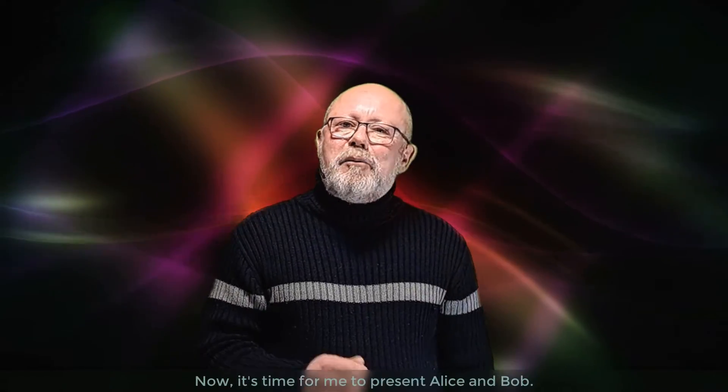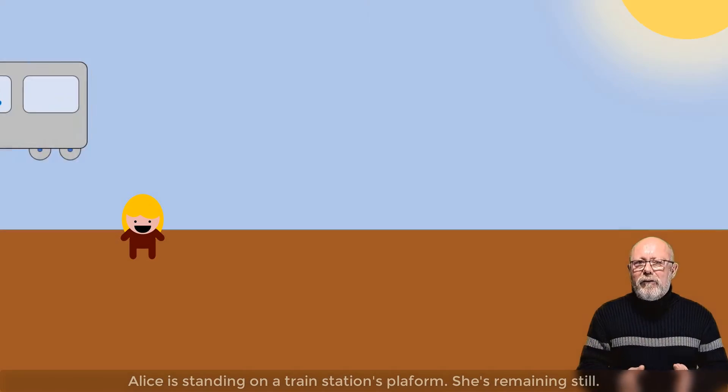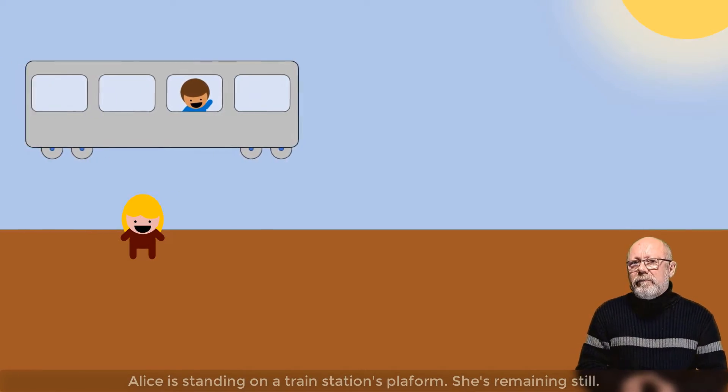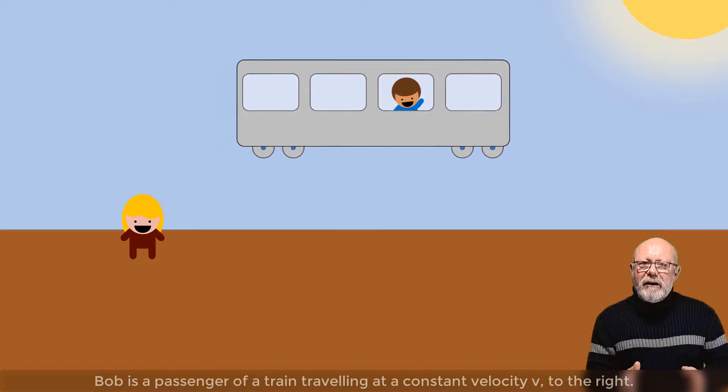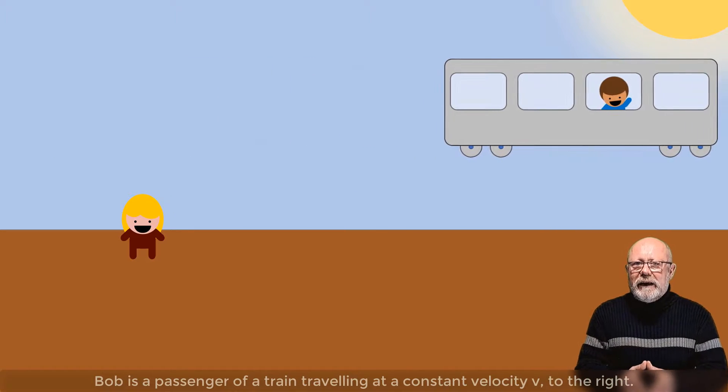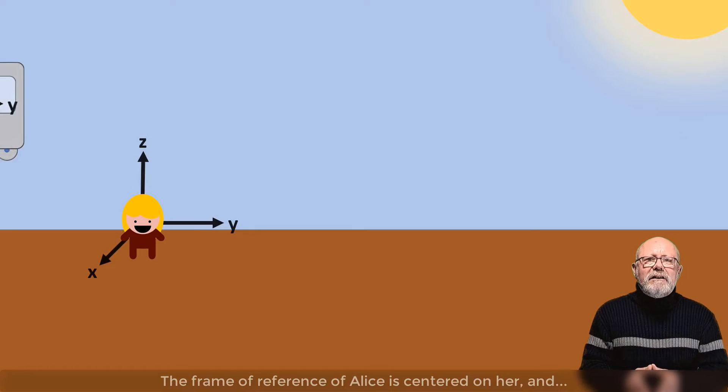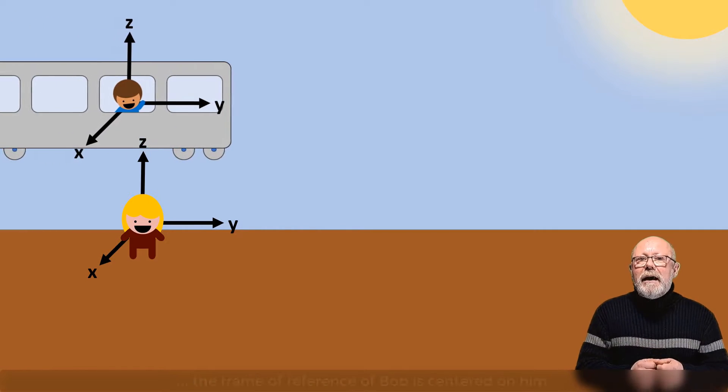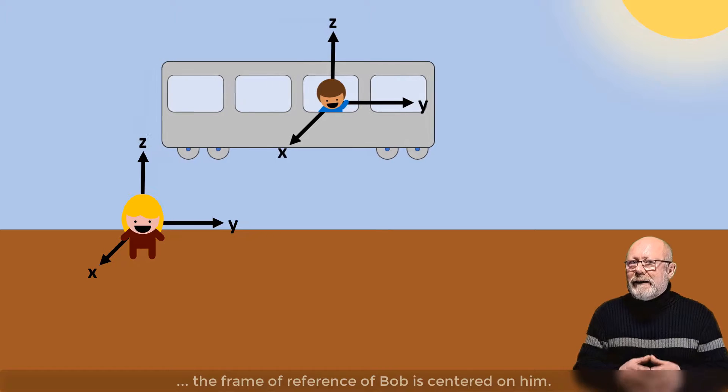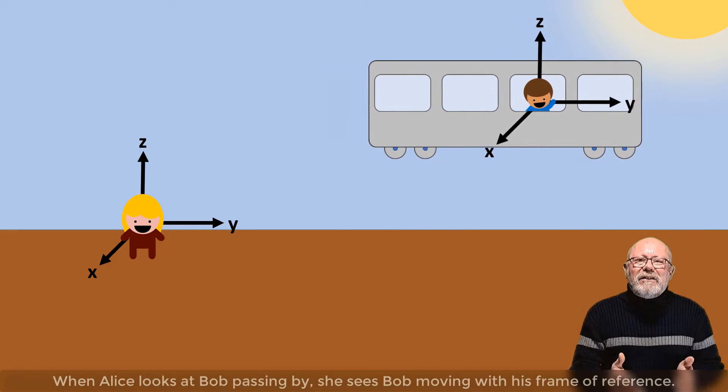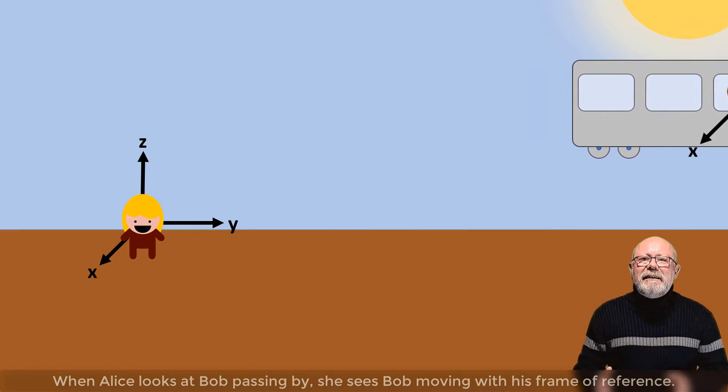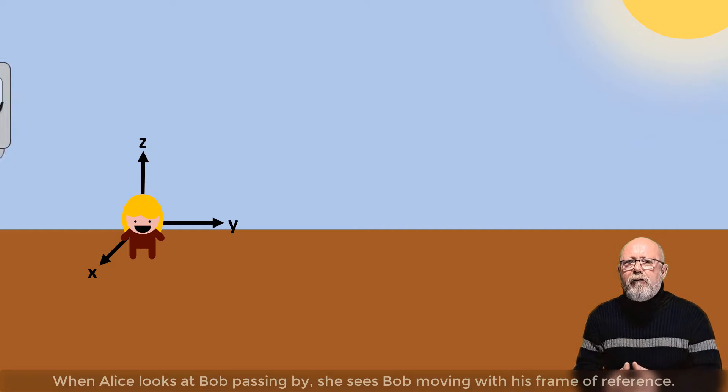Now it's time for me to present Alice and Bob. Alice is standing on a train platform. She is remaining still. Bob is the passenger of a train travelling at a constant velocity v to the right. The frame of reference of Alice is centred on her and the frame of reference of Bob is centred on him. When Alice looks at Bob passing by, she sees Bob moving with his frame of reference.